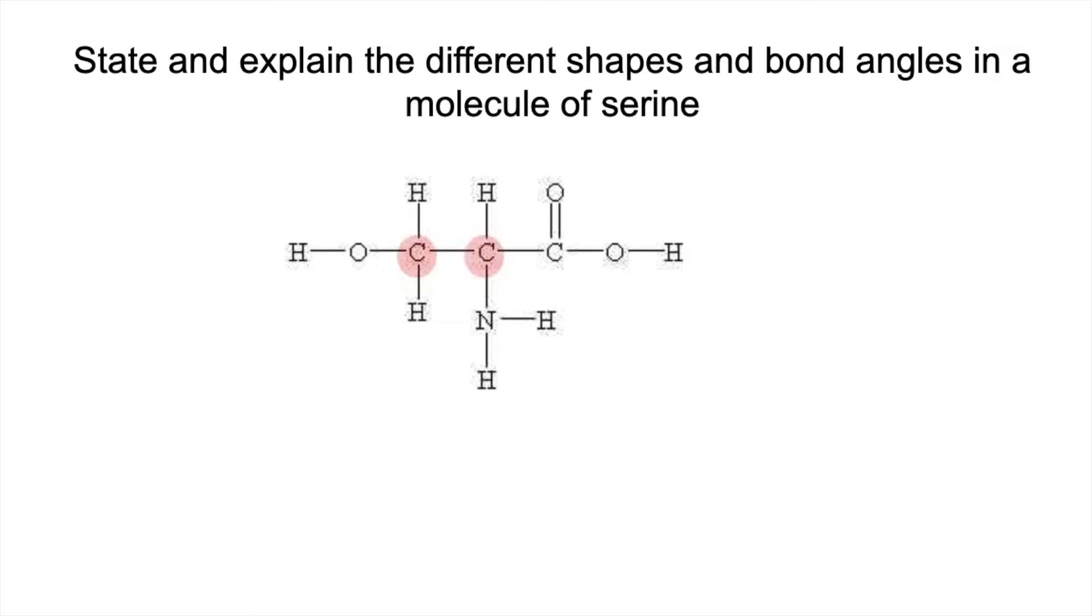We'll start with these two carbons here because they've got the same shape and angle around them. The shape is tetrahedral because you've got four electron regions around the carbons. They're all bonding regions, so you've got equal repulsion and the angle associated with that is 109.5 degrees.